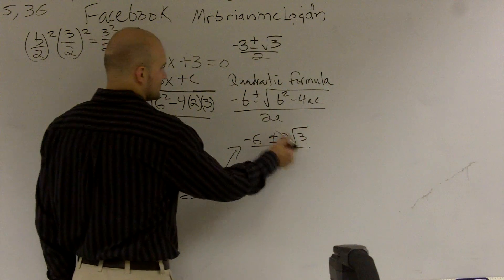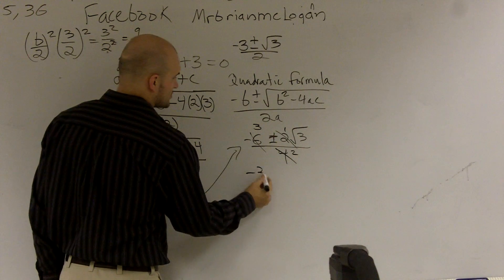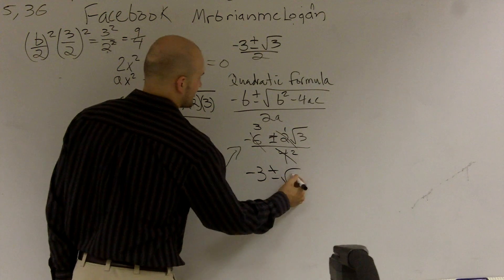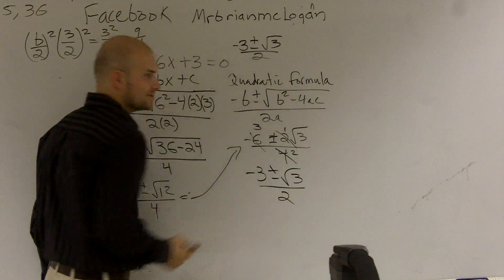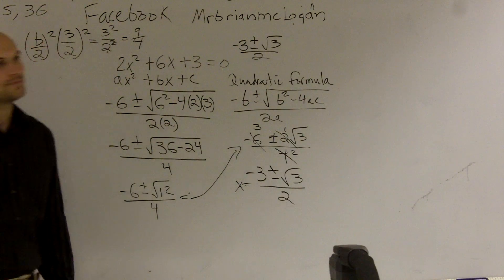So if I cancel out a 2, I'll be left with 1 here, 2 would be there, and 3 would be there. So negative 3 plus or minus radical 3 all over 2. What do you know? It's the exact same thing. All right?